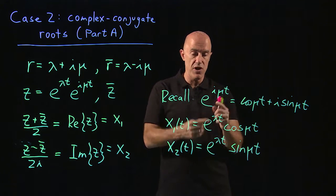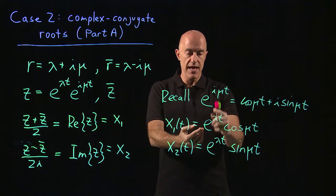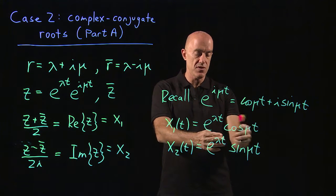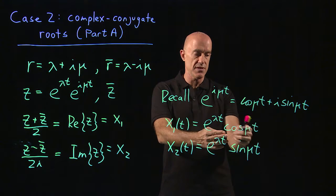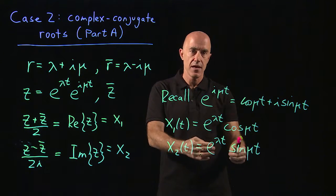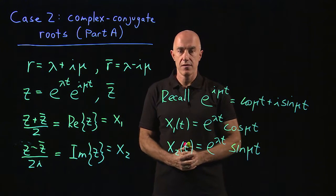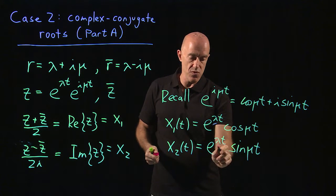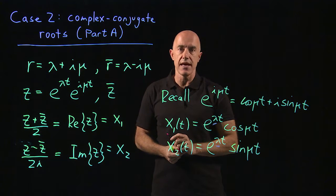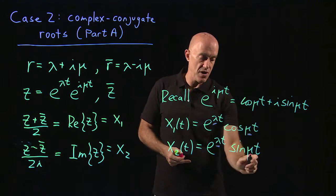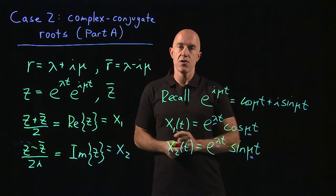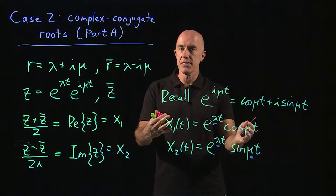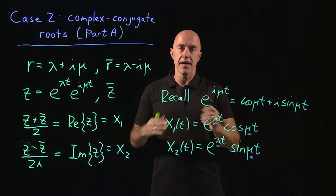We put the real part of r — lambda — in the exponential function, and the imaginary part of r — mu — shows up as the frequency argument of cosine and the frequency argument of sine. So this is what to remember: lambda, the real part of r, goes in the exponential function; mu, the imaginary part of r, goes in the cosine and the sine. We'll use this in the next video to solve an example.